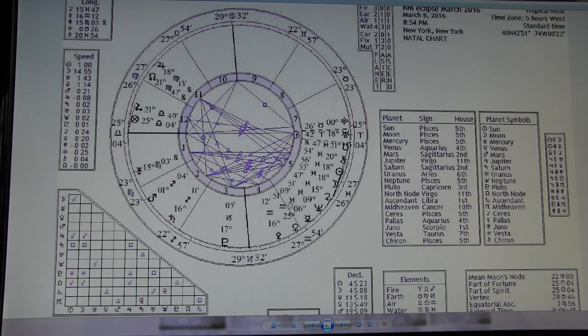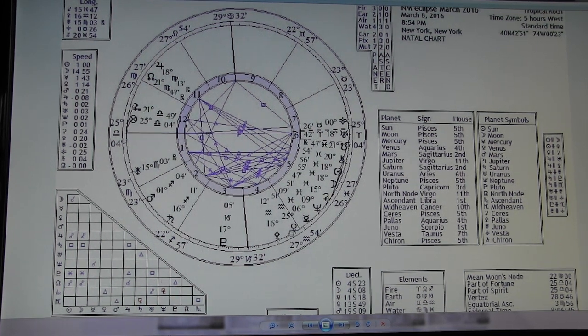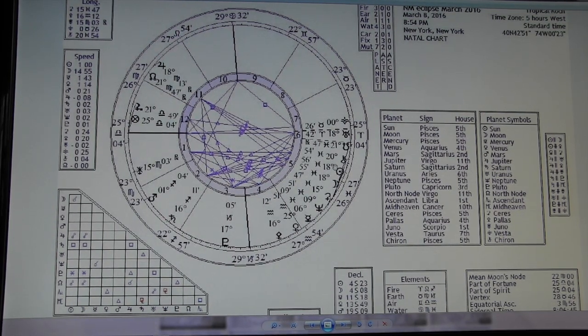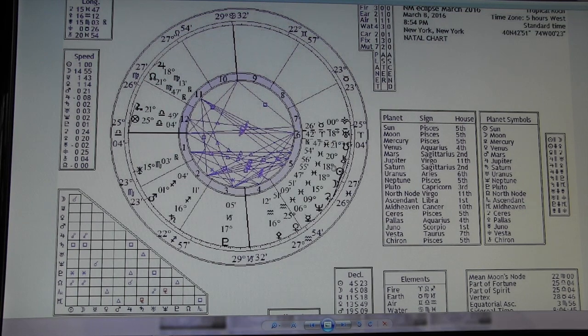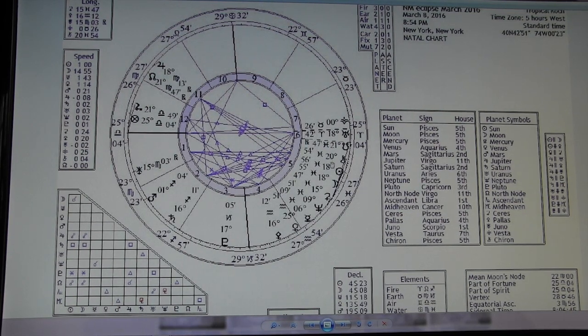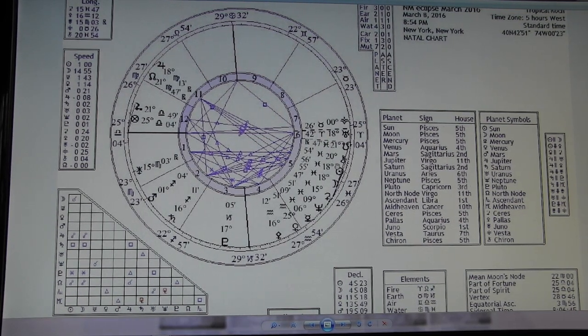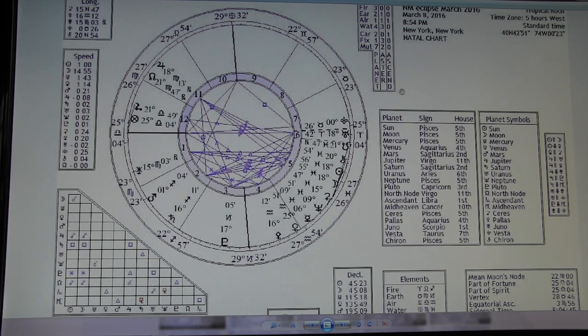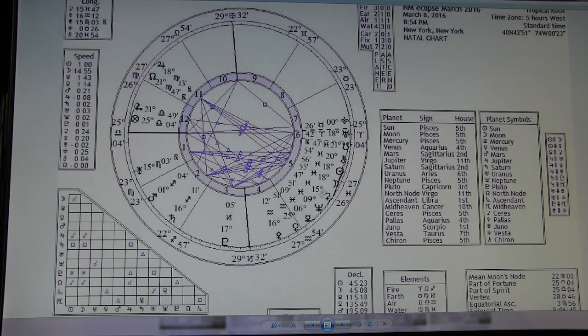With such a concentration of the Pisces energy now, as we're really moving in there, and an eclipse, eclipses are more powerful. Eclipses last a good six months, the energy, whereas a normal new moon only lasts for the moon cycle of 28 days. This lasts longer and it's more powerful anyway, just because it's an eclipse.